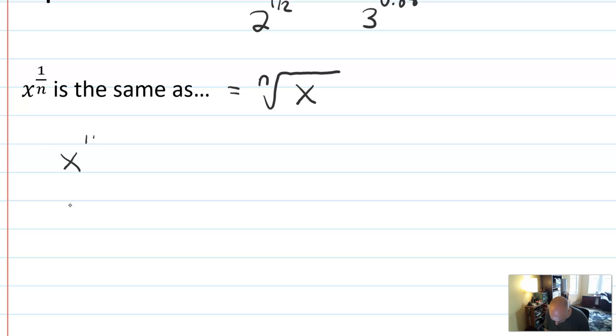Say I have x to the 1 over n and the nth root of x, and I don't know, are they the same? What's going on? Well, what if I took that and raise it to the nth power, and I took this and raise it to the nth power? x to the 1 over n to the n would be the same as x to the n over n, which would be x.